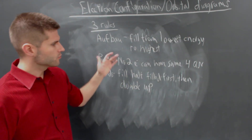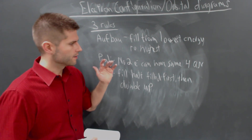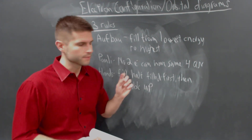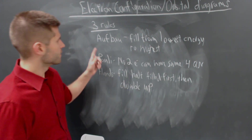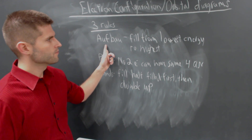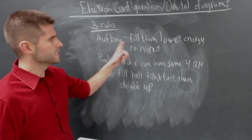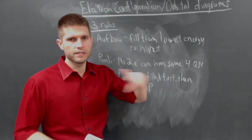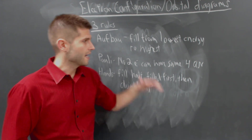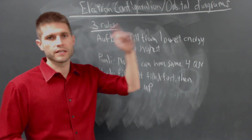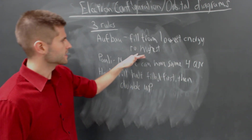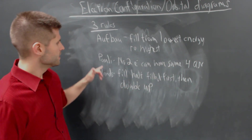So the three rules that we're going to follow as we're doing these problems: the first rule is called the Aufbau Principle. It states that you fill from the lowest energy orbital first, and then start filling in the higher energy. So that's our first rule.